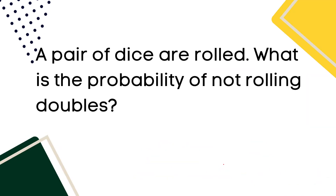Example 3: A pair of dice are rolled. What is the probability of not rolling doubles? The doubles are: 1-1, 2-2, 3-3, 4-4, 5-5, and 6-6 — that is 6 doubles out of a total sample space of 6 times 6, which equals 36.